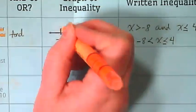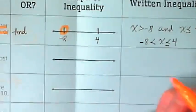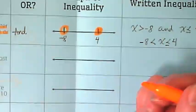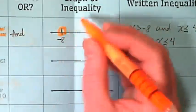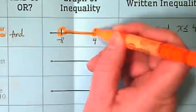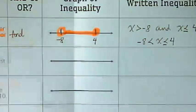This is what it's going to look like on the graph. I get an open circle on the negative 8, I get a closed circle on the 4. And every number in between those two numbers, including the 4, would make this inequality true.